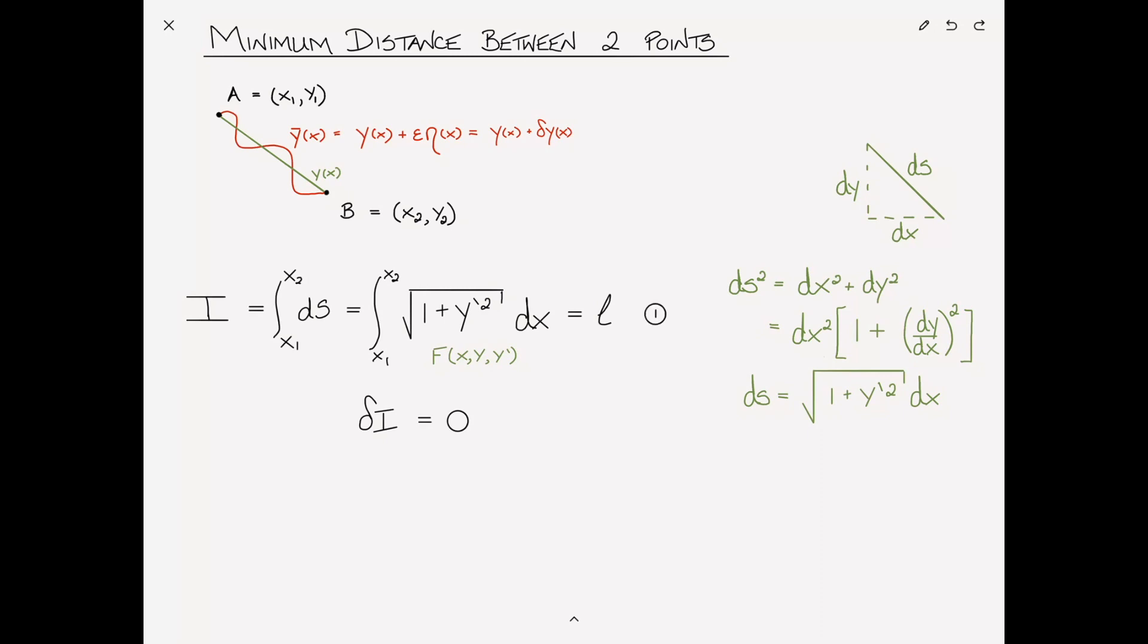Let's give these some numbers, one, two, and three. Okay. And then we derive the Euler-Lagrange equation, which in its general form is ∂f/∂y minus d/dx of ∂f/∂y' is equal to zero.